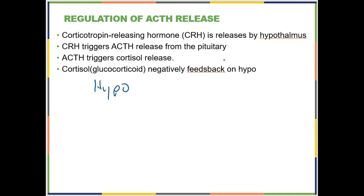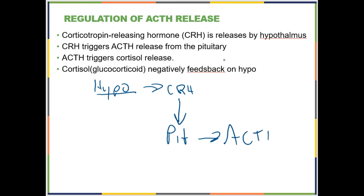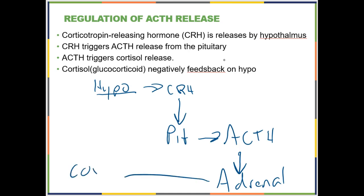We're always going to start with the hypothalamus. That is going to release what is called CRH — corticotropin-releasing hormone. That travels to the pituitary and causes the pituitary to make ACTH. Note that the word 'tropic' means stimulating, so adrenocorticotropic hormone stimulates the adrenal cortex. ACTH is going to stimulate the adrenal cortex to release cortisol, and then cortisol is going to negatively feed back on the hypothalamus.